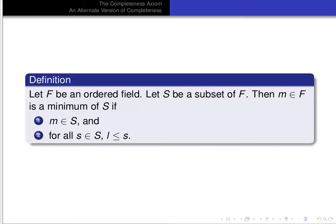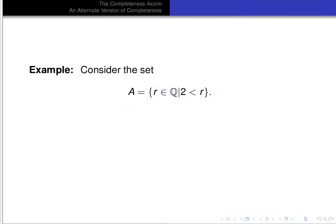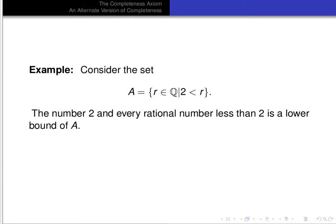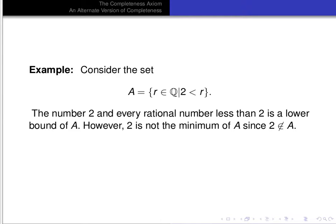The definition of minimum is similar to greatest lower bound in the sense that we add a condition to being a lower bound. The condition it adds is that the minimum is in the set. We don't require the greatest lower bound to be in the set. So we want to be clear about the distinctions between a lower bound, a minimum, and a greatest lower bound. Let's look at some examples. Consider the set A of all rational numbers r such that 2 is less than r — all rational numbers larger than 2.